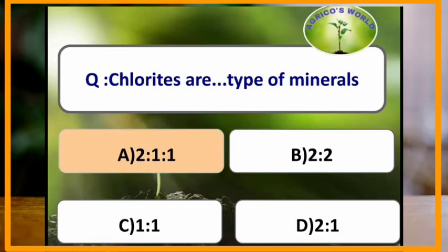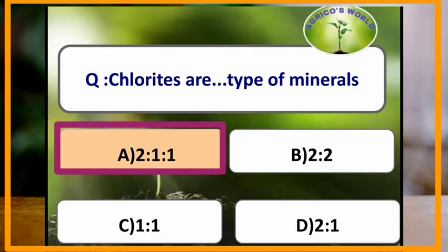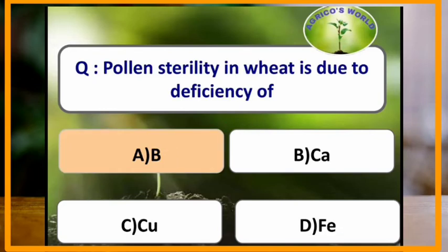Chlorides are which type of minerals? Chlorides are 2:1:1 type of minerals. Pollen sterility in wheat is due to deficiency of boron.